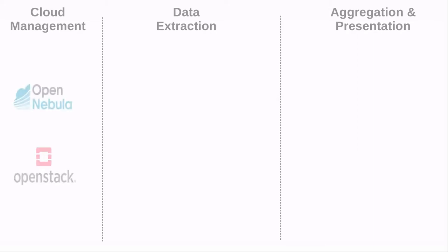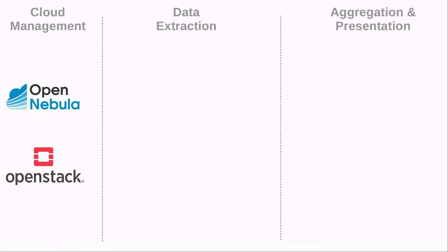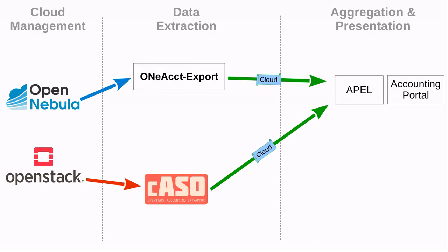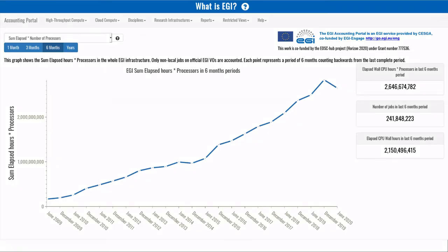At the management level we have OpenNebula and OpenStack, who are the originators of the accounting data — they know most of the details about their virtual machines. Then we have extraction tools that can talk to the underlying managers and present the collected data to the aggregation layer. In the context of EGI, there's APEL and the EGI accounting portal on top of that. The extractors collect accounting data from the cloud management layer and push it through to the aggregation layer, and finally the accounting portal displays it in some meaningful way.